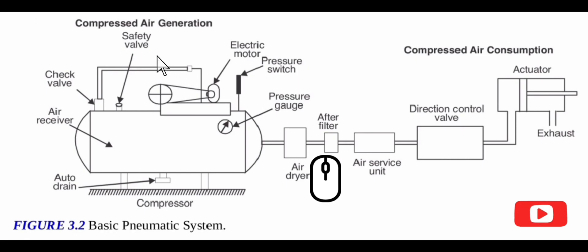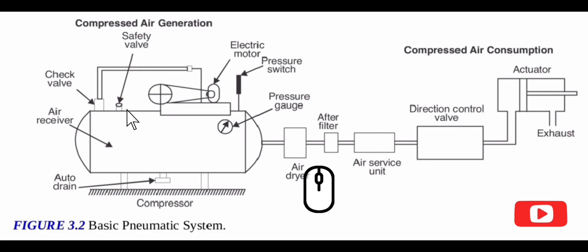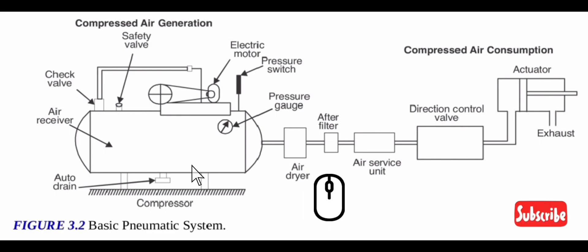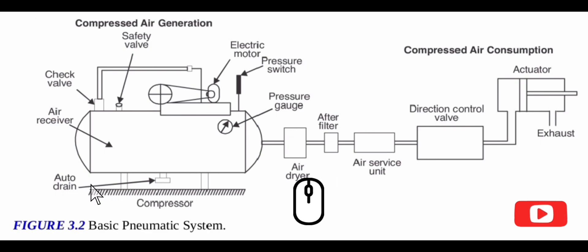5. Safety valve: The function of the safety valve is to release extra pressure if the pressure inside the receiver tends to exceed the safe pressure limit of the receiver. 6. Auto drain: Air condenses to give out water in the receiver, and a device called auto drain directs this water out.